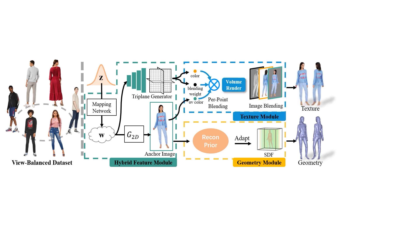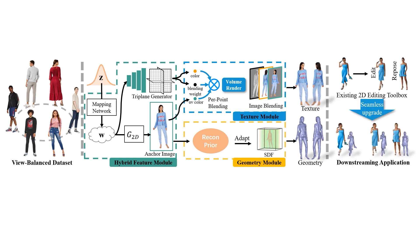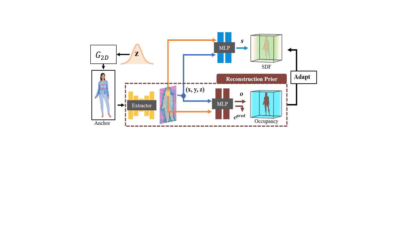Finally is the texture module, which includes texture and blending field generation and a two-stage blending strategy for high-quality appearance. HumanGen can also incorporate various off-the-shelf 2D latent editing methods seamlessly, lifting them into 3D.